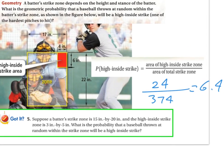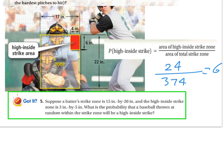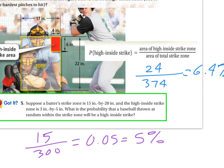Similar question, just different dimensions here. 3 by 5 for high inside strike zone would be 15, divide that by 15 by 20, which is 300. So 15 over 300 turns out to be 0.05, which is the same as 5%. Geometric probabilities are going to take that target zone divided by the entire area that you're covering.